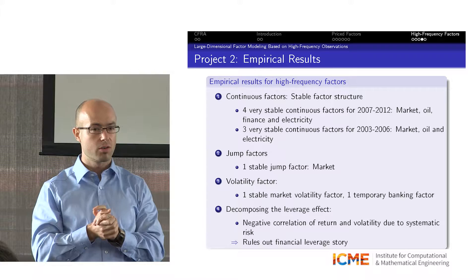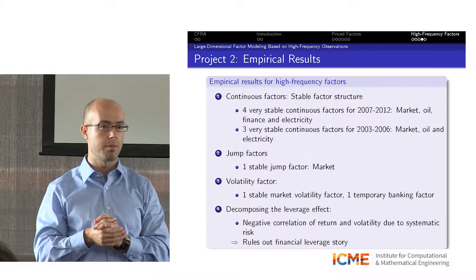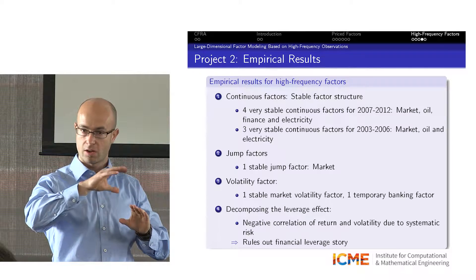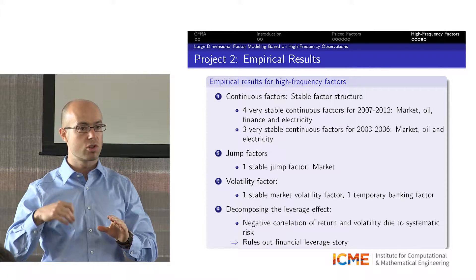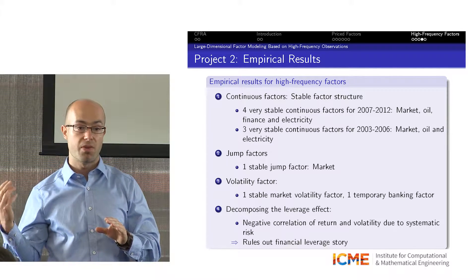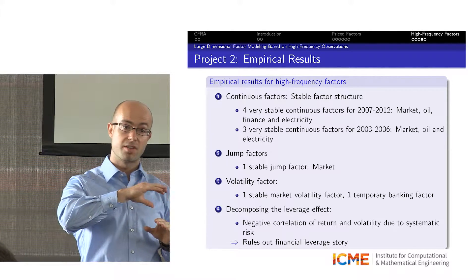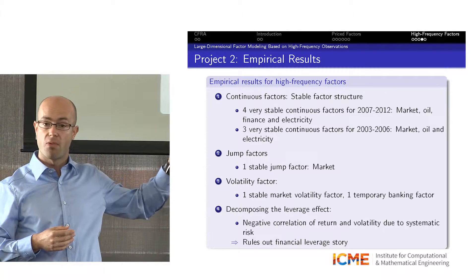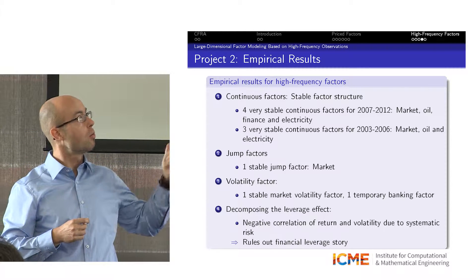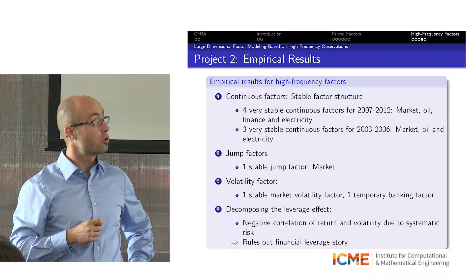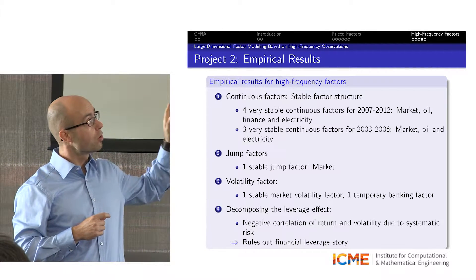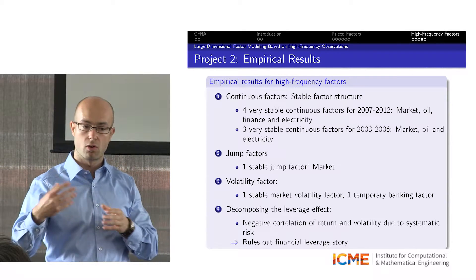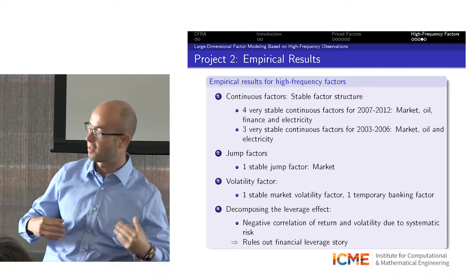I can show that the factor structure is quite stable over time. From 2003 to 2006, three factors are sufficient and the structure is stable. In 2007, when the financial crisis started, a finance factor appears, and after that we have four factors through 2012. The jump factors are different from the continuous factors — a one-factor model describes the jumps very well. I'm also studying the volatility factor structure and the correlation between volatility factors and return factors.